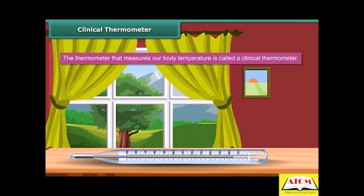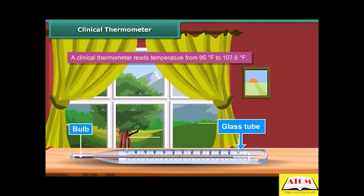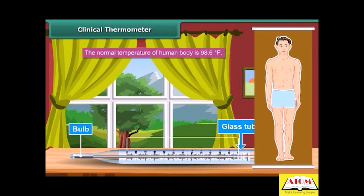A clinical thermometer consists of a long, narrow, uniform glass tube. It has a bulb at one end filled with mercury. Outside the bulb, a small shining thread of mercury can be seen. A clinical thermometer reads temperature from 95°F to 107.6°F. The normal temperature of the human body is 98.6°F. The clinical thermometer is also known as a doctor's thermometer.